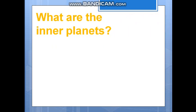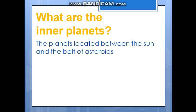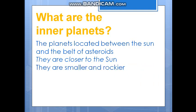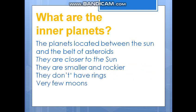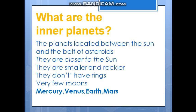Now we will discuss about the inner planets. Look at here. The planets located between the Sun and the belt of asteroids are known as inner planets. They are closer to the Sun, smaller and rockier. They don't have rings and they have very few moons. The inner planets are Mercury, Venus, Earth, and Mars.